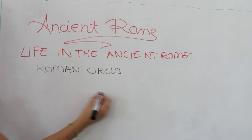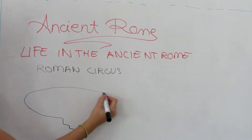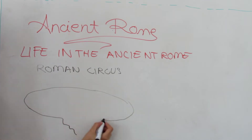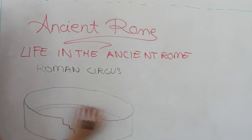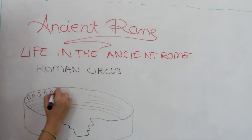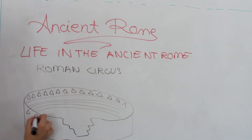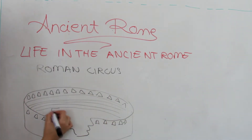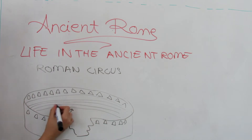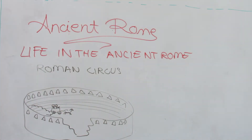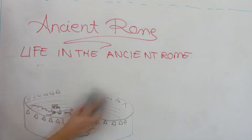The Romans enjoyed their free time in public performances that were offered in the circus, theater, or amphitheater, which were buildings for the fans of citizens. The circus was the largest installation. It was destined to the races.